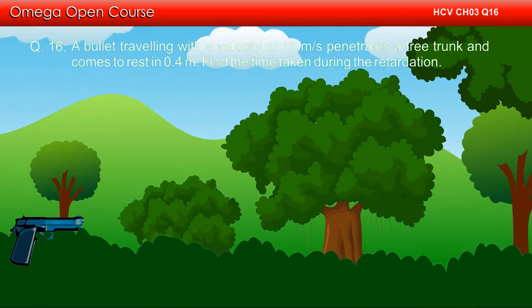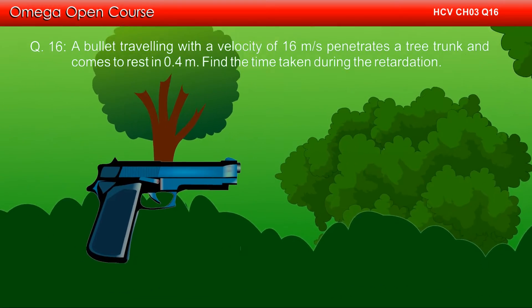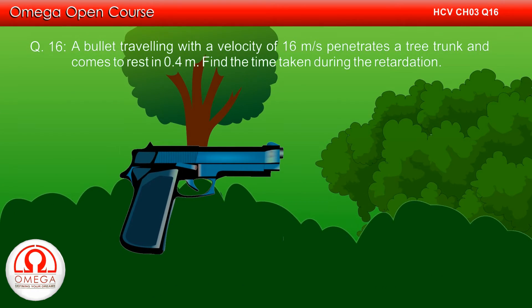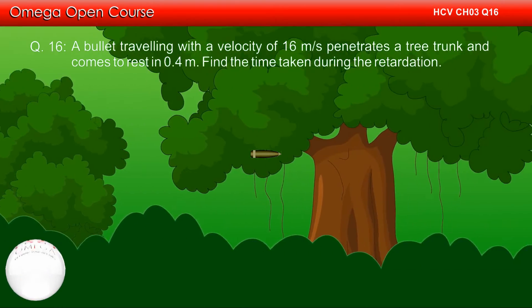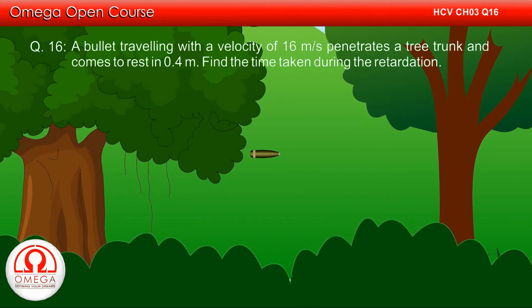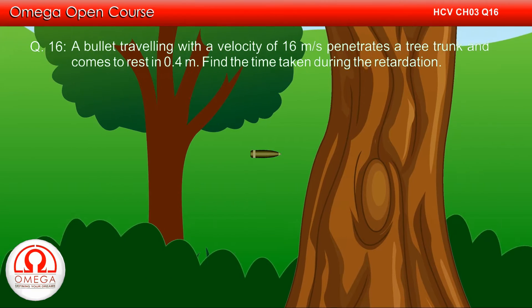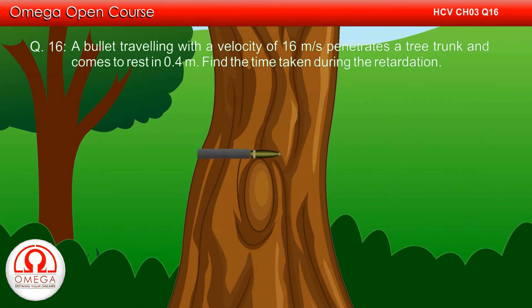A bullet travelling with a velocity of 16 m per second penetrates a tree trunk and comes to rest in 0.4 m. Find the time taken during the retardation.